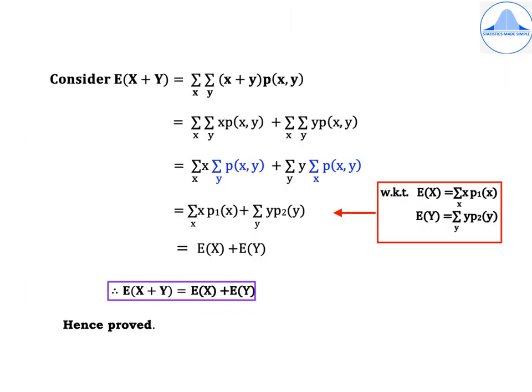Consider E(x + y). Because there are two random variables, there will be two summation signs — one summation over x and the other over y. Whatever is next to the expectation sign, the same will come after the summation signs in small letters along with their probabilities. So we get a double summation over x and y of (x + y) times the joint probability p(x, y).